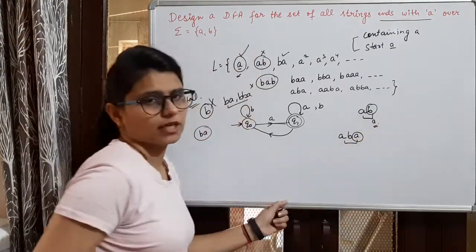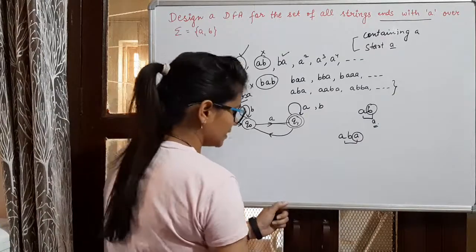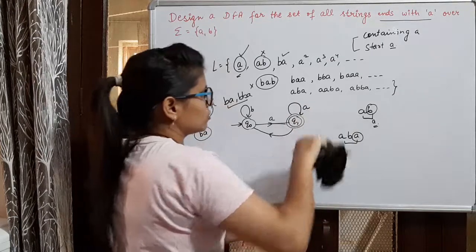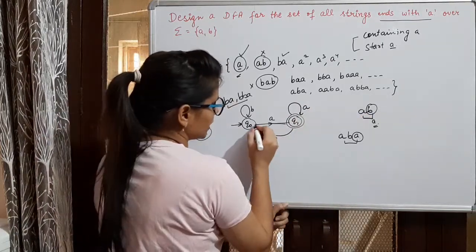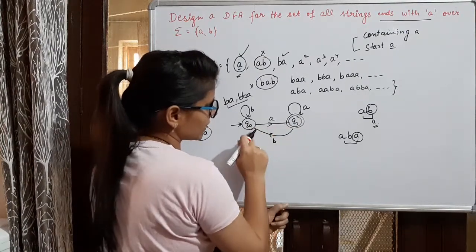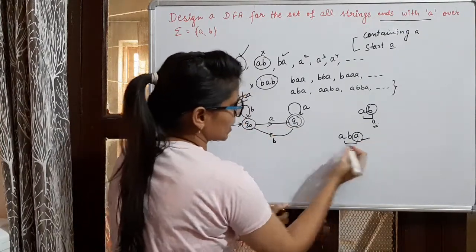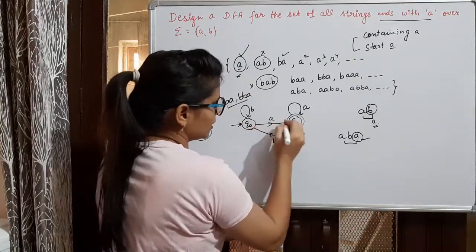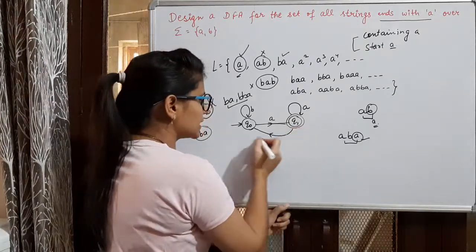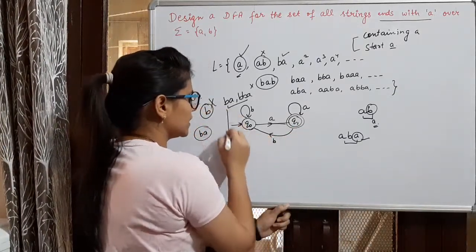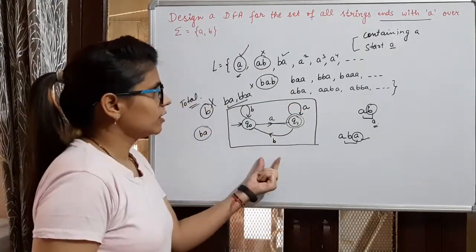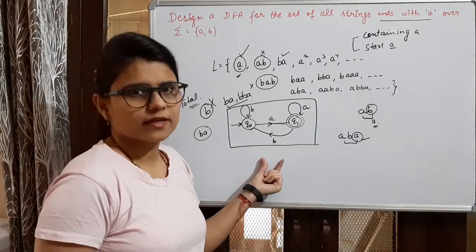So the correct design is: from Q1, on reading A, we stay in Q1 (self-loop), and on reading B, we move to a new non-final state and read B there. This way we accept strings ending with A. From Q1, reading B moves us out of the final state, and reading A brings us back. This is our complete DFA for all strings ending with A.